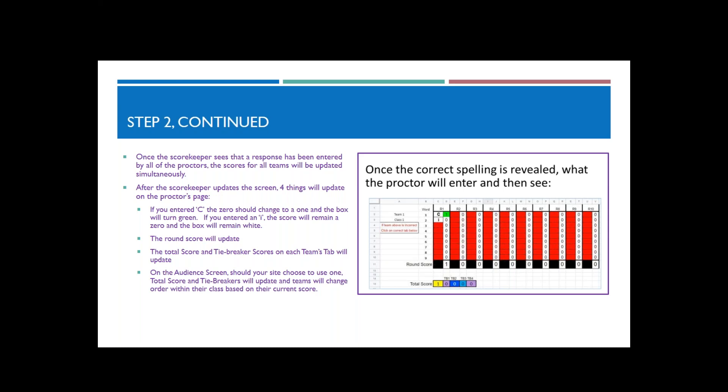Four things are going to update in the proctor's page. If you entered a correct, the zero should change to a one, the box will turn green. If you entered an incorrect i, the box stays white. The round score will update down here. The total score and tiebreaker will update as well. If they choose to use an audience screen, it will also be updated on the audience's screen.